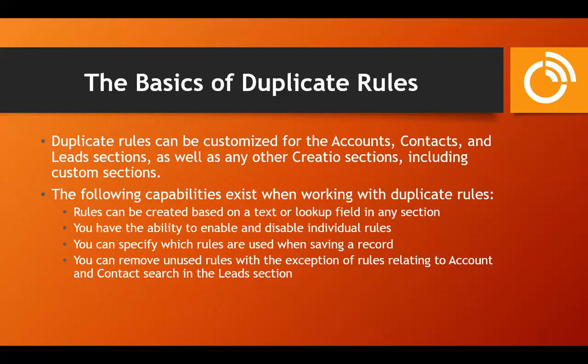When working with duplicate rules, you can create rules based on a text or lookup field in any section. You can enable and disable individual rules as you see fit, specify which rules are used when saving a record — separate from the bulk search — and you can remove unused rules. You can deactivate them or delete them, with the exception of a few rules relating to account and contact search in the lead section.